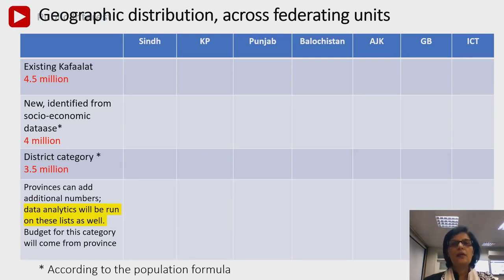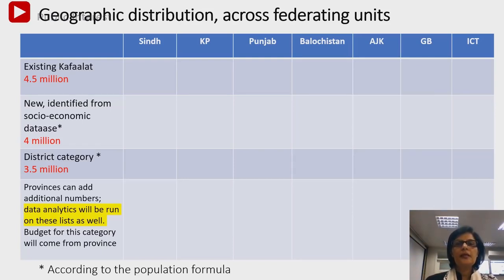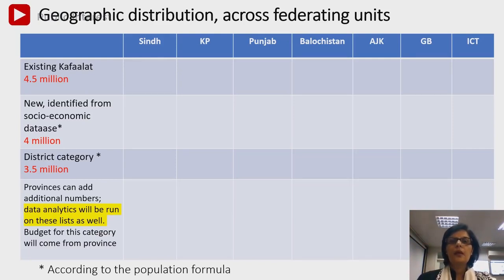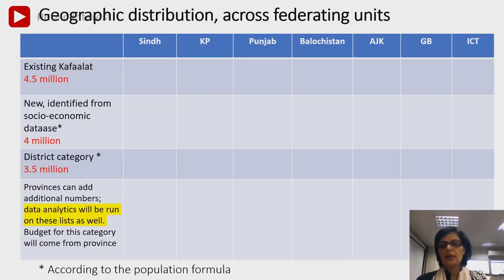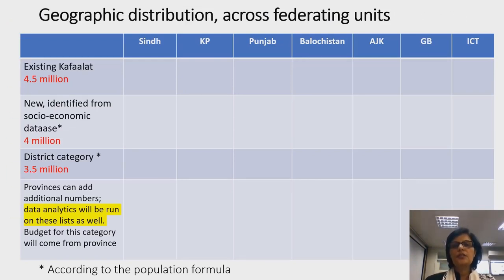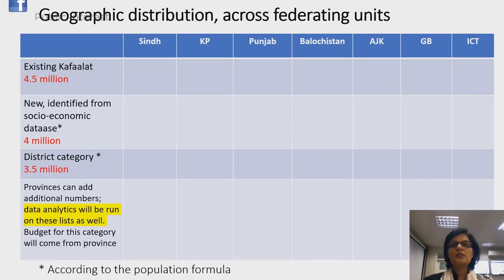These three categories I have described cover provinces and other regions. For distribution, we are using a very transparent formula — the newly identified Socioeconomic Database by district category. In 2017, the distribution of the census was used for the distribution formula. We will use this very transparent formula and share it with all.